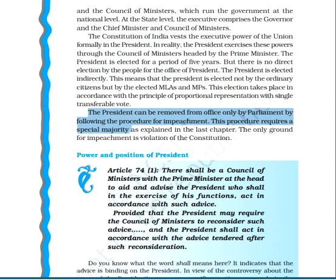Let us now look at Article 74(1): 'There shall be a council of ministers with the prime minister at the head to aid and advise the president, who shall, in the exercise of his functions, act in accordance with such advice.' This means the advice of the council of ministers is binding on the president. However, the president may require the council of ministers to reconsider such advice.